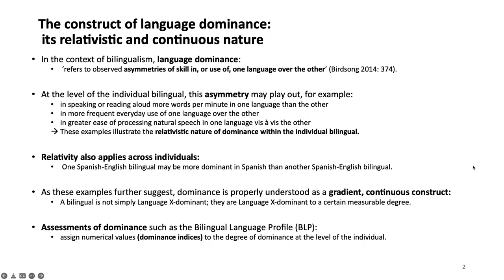For example, one Spanish-English bilingual can be more dominant in Spanish than another Spanish-English bilingual. These examples suggest that dominance should be understood as a gradient, continuous construct. A bilingual is not simply dominant in one language or the other — they are dominant in that language to a certain measurable degree. Assessments of dominance, such as the BLP, assign numerical values or dominance indices to the degree of dominance at the level of the individual.